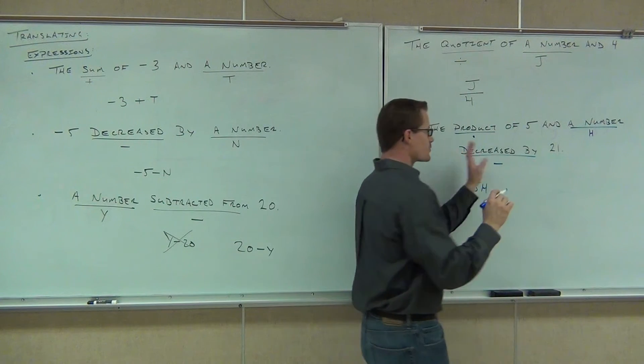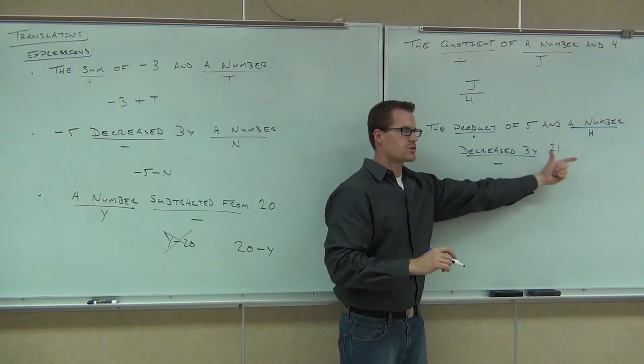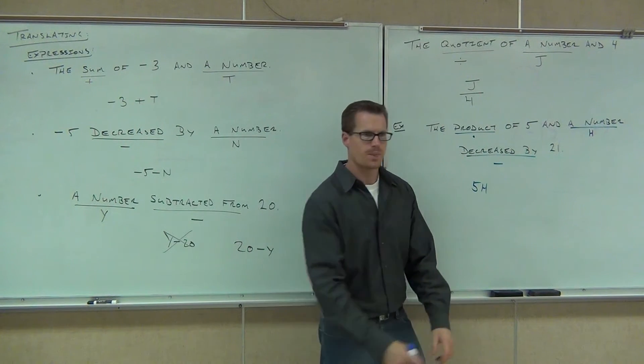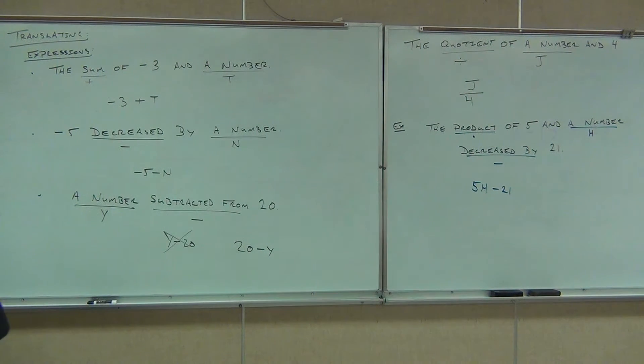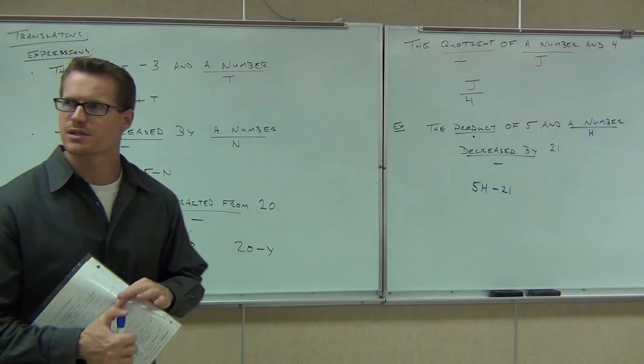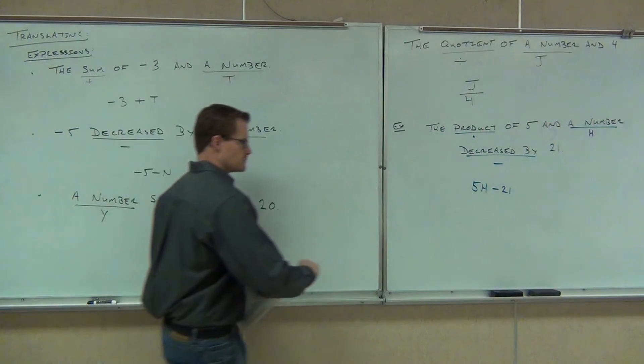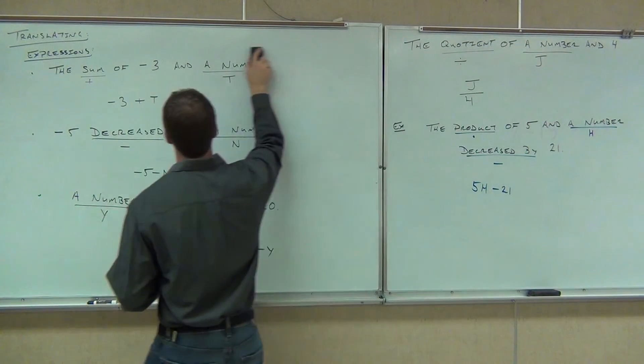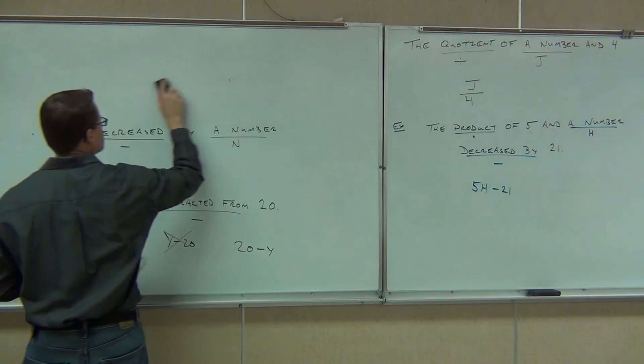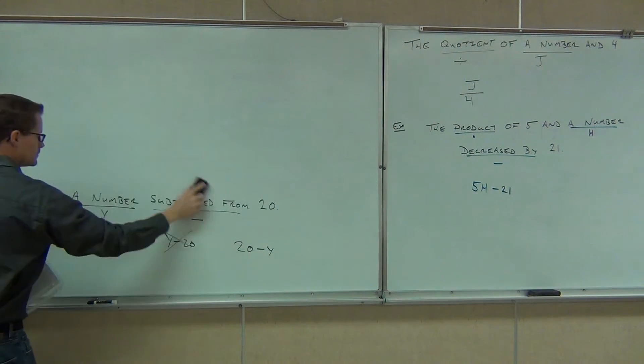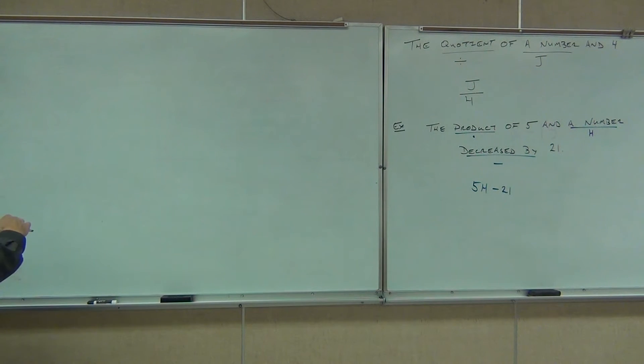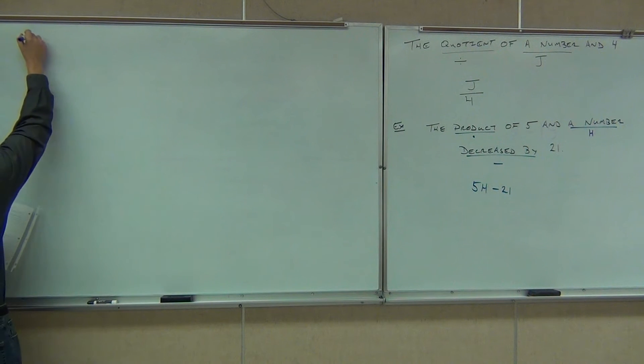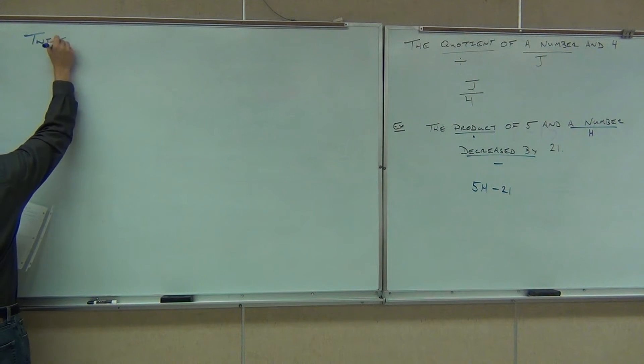Now what this said is, whatever you've got here, it's going to be decreased by 21. How do we show decreased by 21? Minus 21. That's the way we write that or represent that expression. Let's try a couple more. It looks like we need a little bit more help on this thing and then we'll be good. Okay.